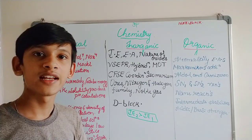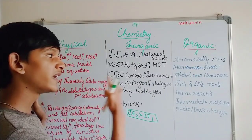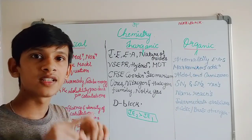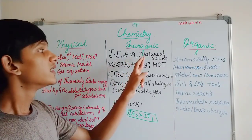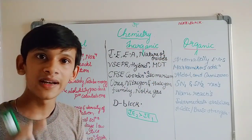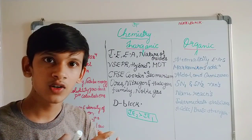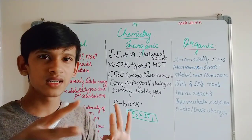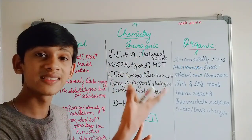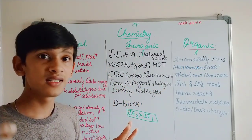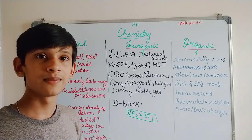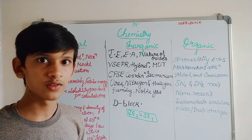Next is electron gain enthalpy — it increases across the period, and noble gases stop because their shells are complete. Next is the nature of oxides: in general, metals form basic oxides and non-metals form acidic oxides. Particular metalloids and specific elements like zinc, aluminum, and beryllium are amphoteric oxides.